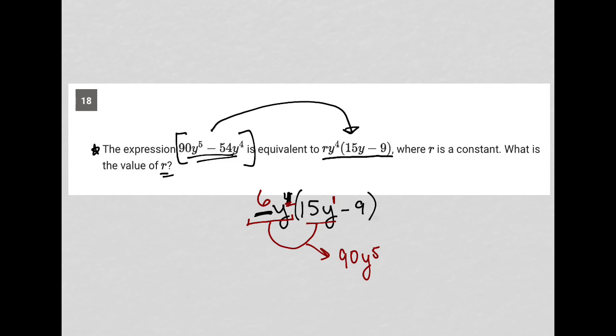And then I can test out, is it also true that 6y to the 4th power times negative 9 is negative 54y to the 4th power? And that is absolutely true.